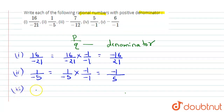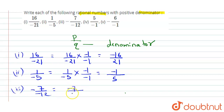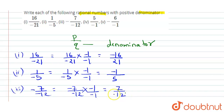The third one is minus 7 upon minus 12. We can write it as minus 7 upon minus 12 multiplied by minus 1 upon minus 1, and we get 7 upon 12. Again, our denominator is converted into a positive number.